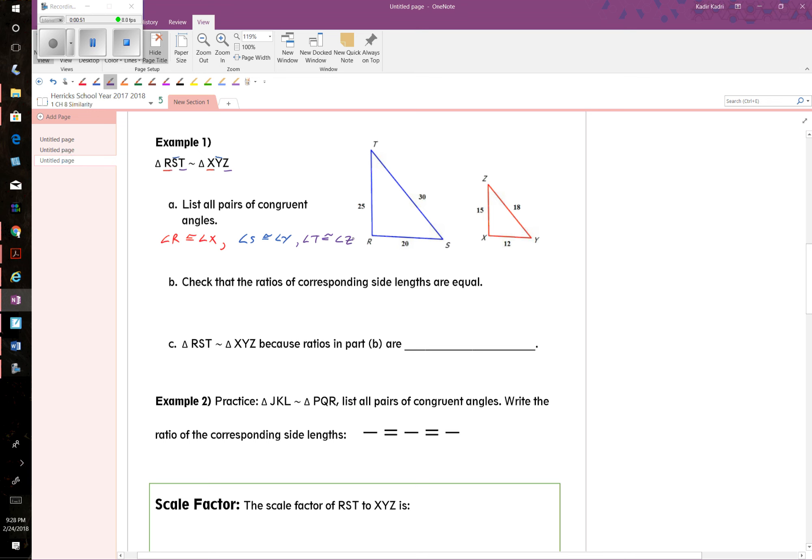And angle T corresponds to angle Z because both those angles are in the last position of the name. Okay, they're telling us that these guys are similar, so that means each of their corresponding sides also have to be in the same ratio.